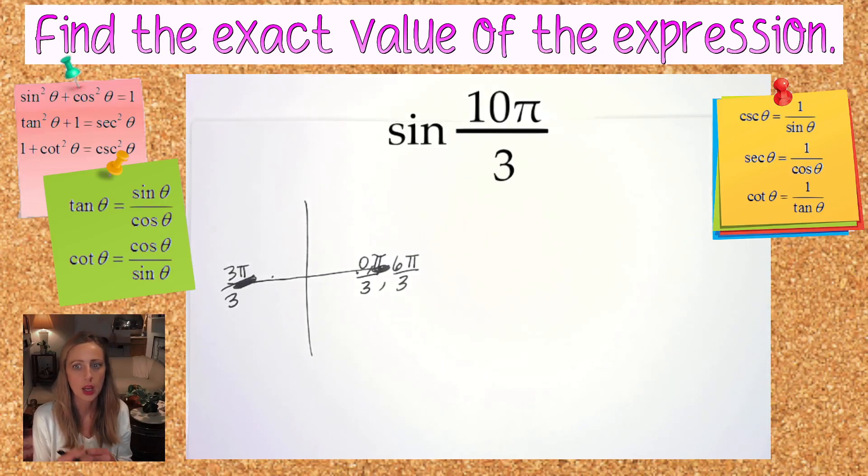This technique, even though it might be different than how you do it, actually comes in very handy when we start graphing trig functions. When we start graphing trig functions, we're going to be plotting 5 critical values on our x-axis to get a complete cycle, and being able to count by increments of π, fractions of π, is very beneficial to you doing really well in that unit. Double whammy, right?